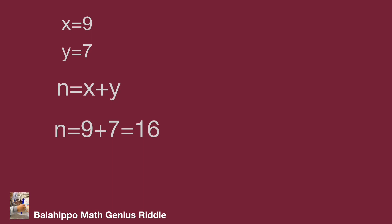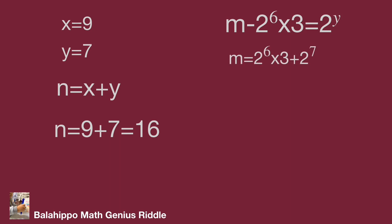Back to equation 2: m minus 2 to the power of 6 times 3 equals 2 to the power of y. Substituting y by 7, so m equals 2 to the power of 6 times 3 plus 2 to the power of 7. Simplifying, m equals 2 to the power of 6 times bracket 3 plus 2 bracket, so m equals 2 to the power of 6 times 5 equals 320. We have found the values of m and n.